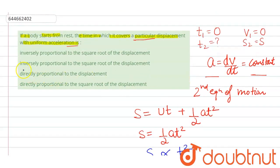So in first option it is written inversely proportional to, no it is not correct. Inversely proportional to, no. Directly proportional to displacement, no. Directly proportional to square root of displacement, yes. Option fourth is correct.